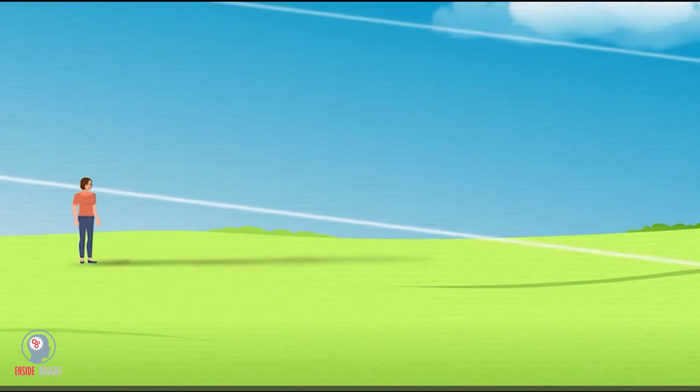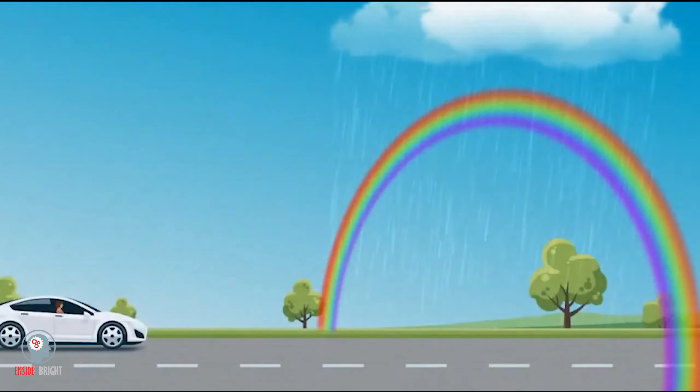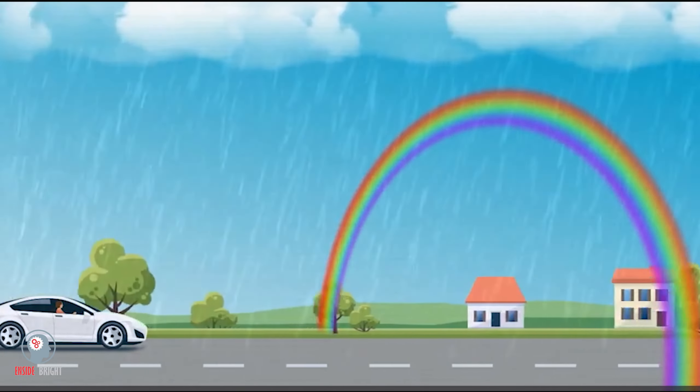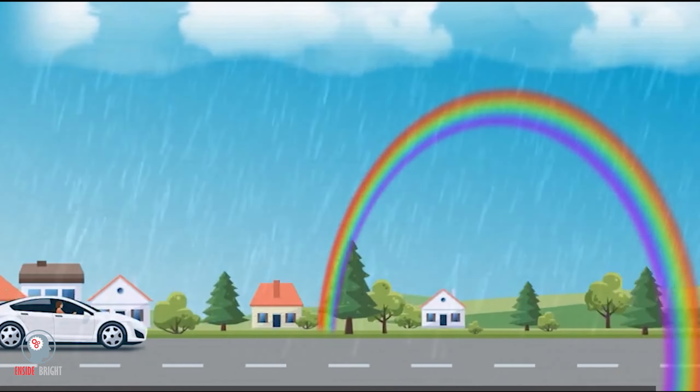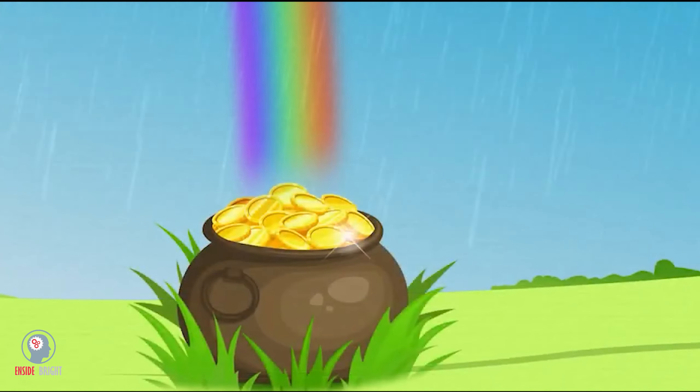Rainbows are not fixed objects but appear to move as you move. This is because the light that forms the rainbow does so at a specific distance and angle which will always stay the same. So while the rainbow you see is always unique to you, you can never reach the end of it, and there is no pot of gold at the end of the rainbow.